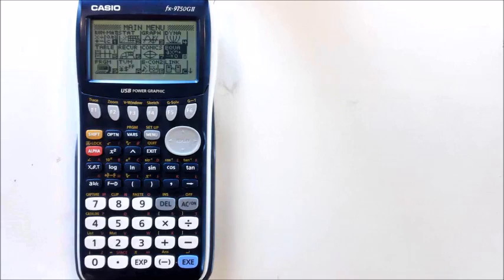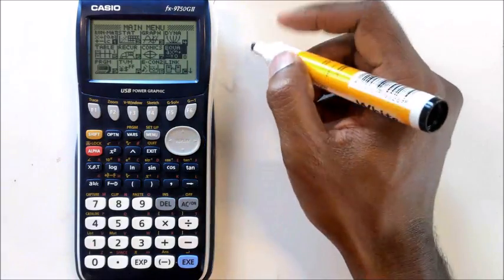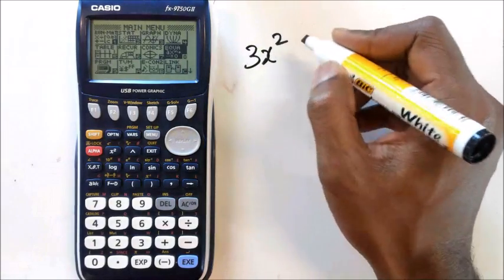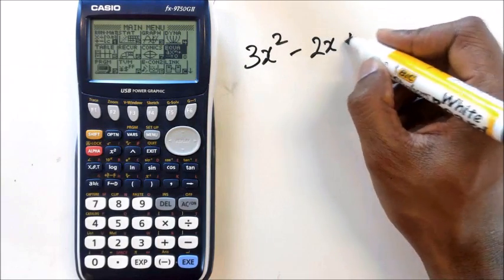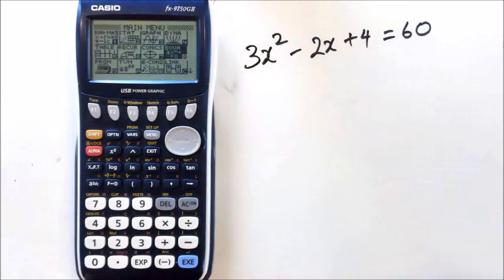Hey guys, in this session we're going to be looking at solving a quadratic. So let's say we've got an equation that's looking like this, where we've got 3x squared minus 2x plus 4 equals 60.